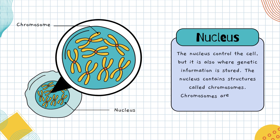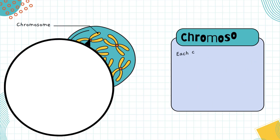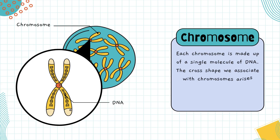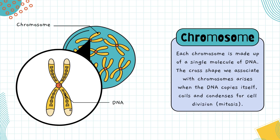The nucleus contains structures called chromosomes. Chromosomes are made of DNA. Each chromosome is actually made of just one long molecule of DNA, tightly wound and packaged. You can imagine it like an enormous instruction scroll that's been folded up to fit inside the cell. That classic X shape you've seen? It only appears right before a cell divides. That's when the DNA copies itself, then coils and condenses, getting ready for a smooth split during cell division, or mitosis.